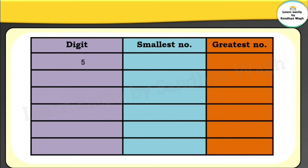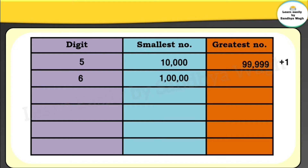The smallest five-digit number is ten thousand, and the greatest five-digit number is 99,999. When we add one to the greatest five-digit number, we get the smallest six-digit number, which is one lakh. The greatest six-digit number is nine lakh ninety-nine thousand nine hundred and ninety-nine.